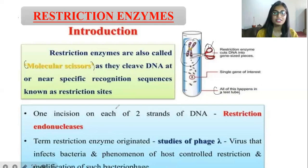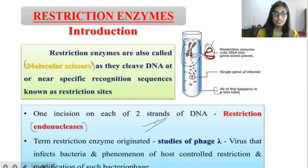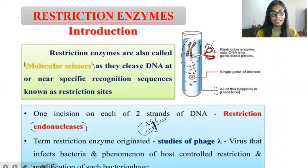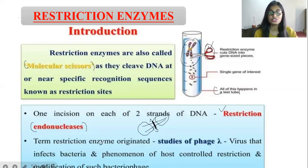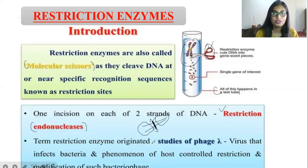Restriction endonucleases make one incision on each of the two strands of DNA. The term 'restriction enzyme' originated while studying bacteriophage bacteria. In bacteriophage study, this restriction enzyme term was originated — specifically from the phenomenon of host-controlled restriction.